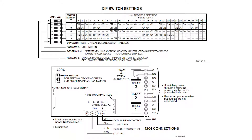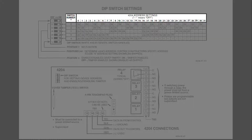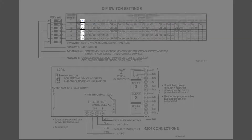This device can be used on any device address 01 to 30. Using the cut sheet, find the address you need on the top row of numbers. Then, using the column, set your DIP switches based on the DIP number from the far left column.